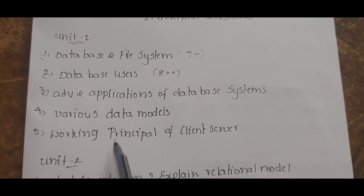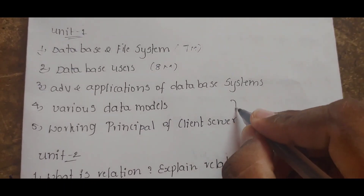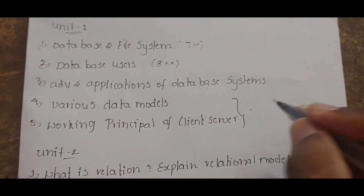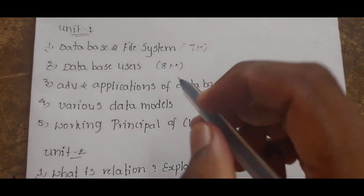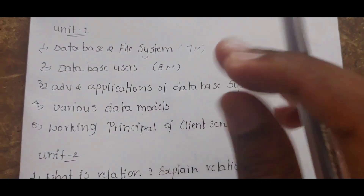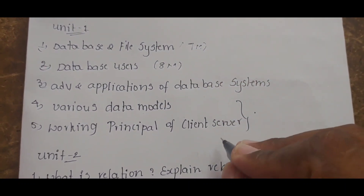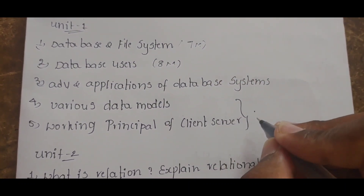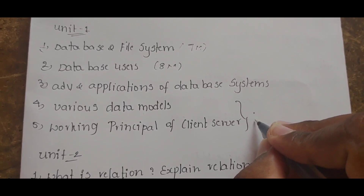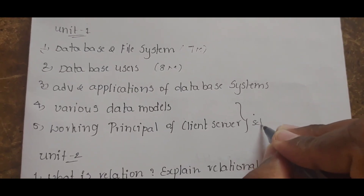Throughout the video, various data models and the working principle of client-server are important. Database versus file system is also important. If you focus on these, you can secure around 7 to 14 marks. Short questions in each section make 7 to 14 marks sure.